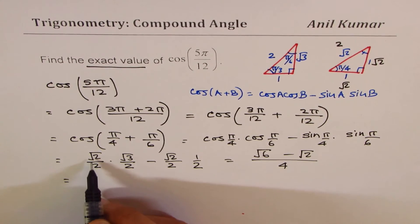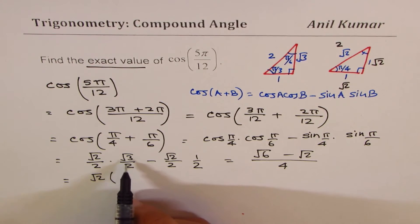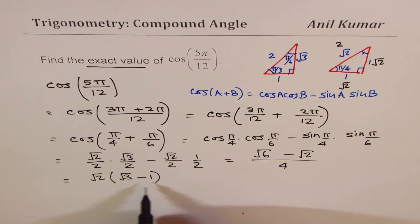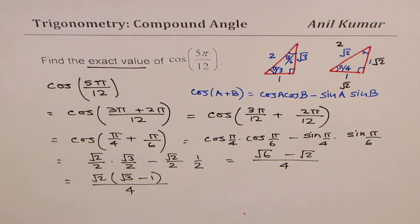The other way could be you could actually take √2 common in the numerator. So you get √2(√3 - 1), and the denominator is 2 times 2 which is 4. So either one of them is okay.